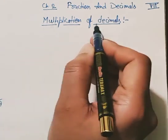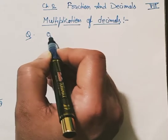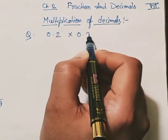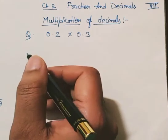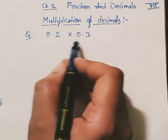We have to find the multiplication of decimals. For this, I'm taking a question: 0.2 multiplied by 0.3. The question is how to multiply these decimal numbers. The very easy method is to convert them into fractional terms.